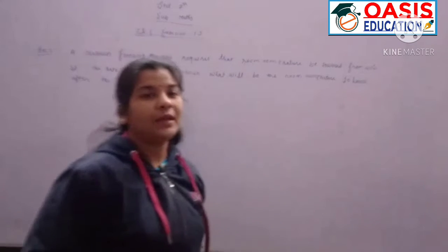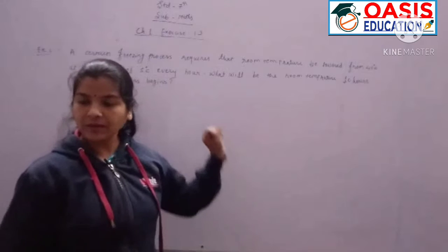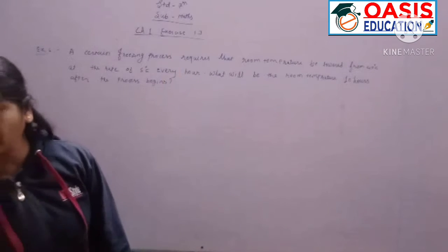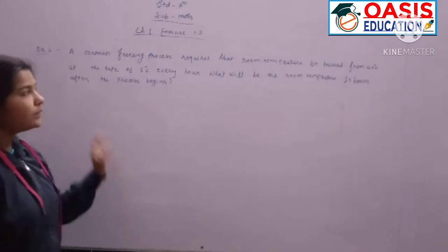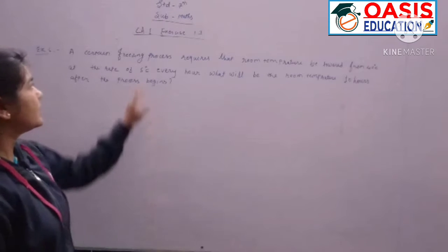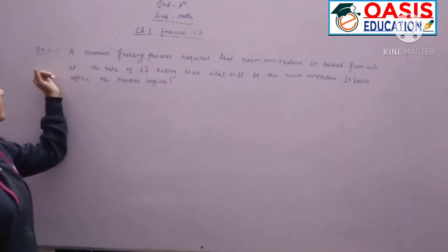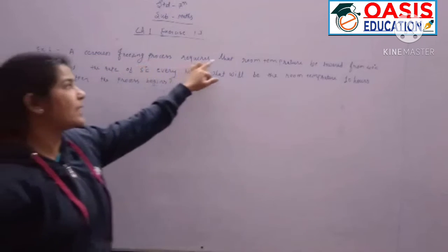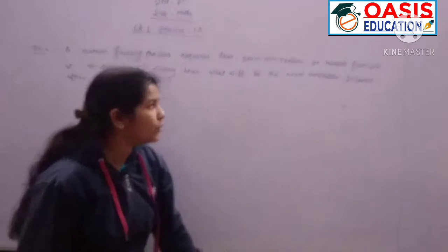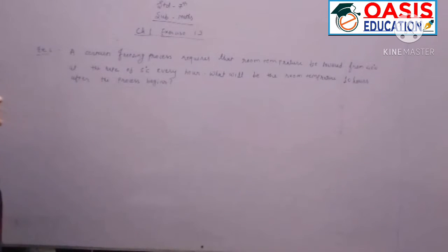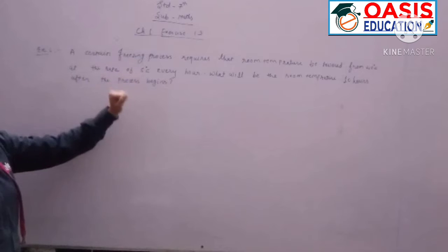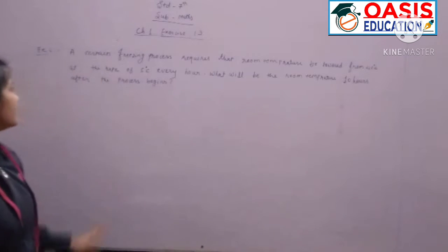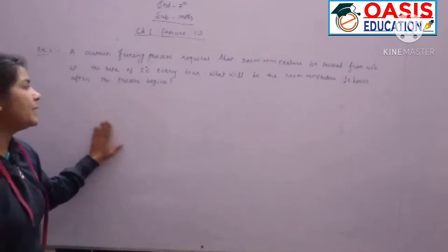Hello, good morning students. In the previous video, we covered exercise 1.3, questions 1 to 5. Today we are going to start exercise 1.3, question number 6, which states: a certain freezing process requires that room temperature be lowered from 40 degrees Celsius at the rate of 5 degrees Celsius every hour. What will be the room temperature 10 hours after the process begins?